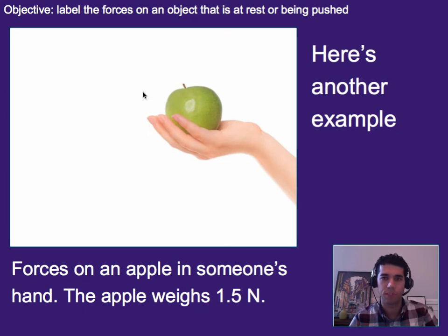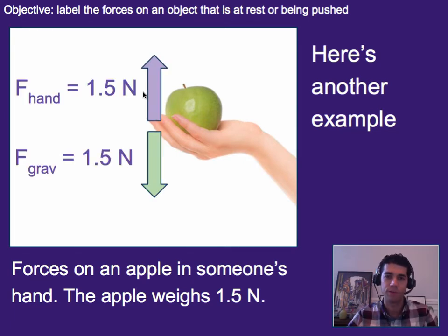Here's another example. Go ahead and pause the video. See if you can guess what two forces are on it and draw an appropriate diagram. Alright welcome back. So the forces on the apple in somebody's hand. If the apple weighs 1.5 Newtons then we know the force due to gravity is on it or weight. And we also know that the hand is holding it up. Here we've included values. Notice that the force due to gravity and the force from the hand are the same value. Notice that we're also representing the vectors for them with the same size vector.